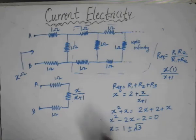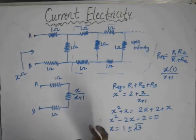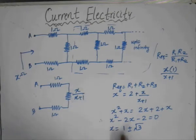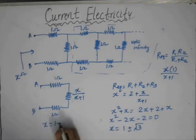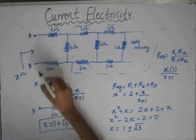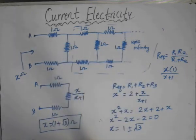Both these values won't be fully valid because we have assumed that the resistor is a passive device. For a passive device, the value of resistance should always be positive. If we consider 1 minus root 3 as a solution, it gives a negative value of x, which would make the resistance an active device. So we ignore 1 minus root 3. The actual value is 1 plus root 3 ohms — this is the resistance between points A and B for an infinite ladder where each element has a resistance of 1 ohm.